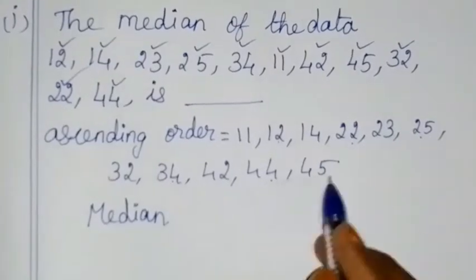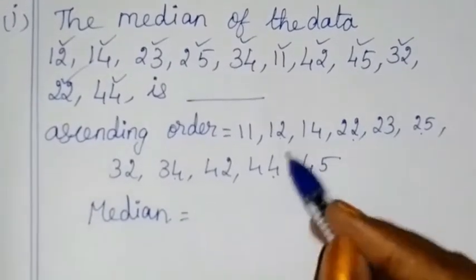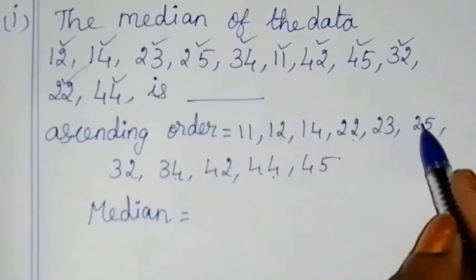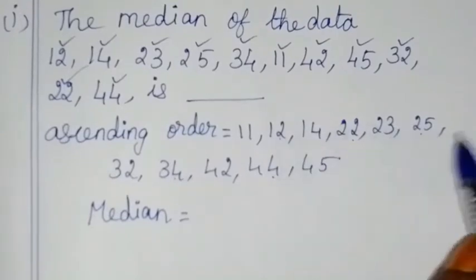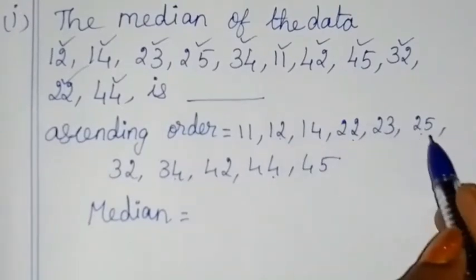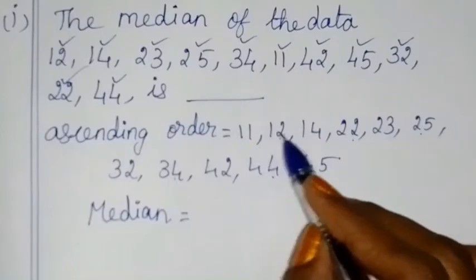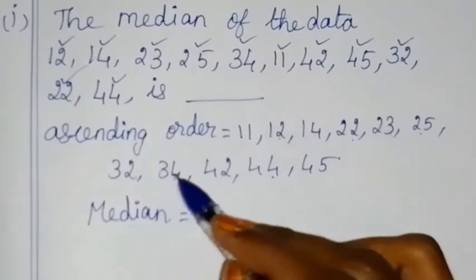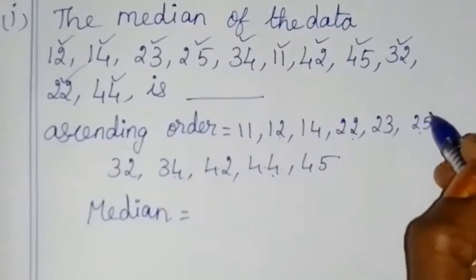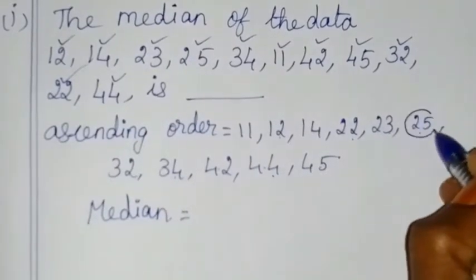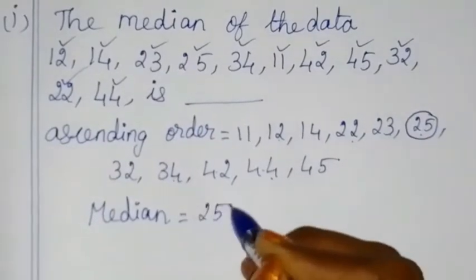So there are 10 and 11 terms — this is the middle term. With 11 number of terms, we have 5 on each side, making the middle term the 6th. Counting 1, 2, 3, 4, 5 — the middle term is 25, so the median is 25.